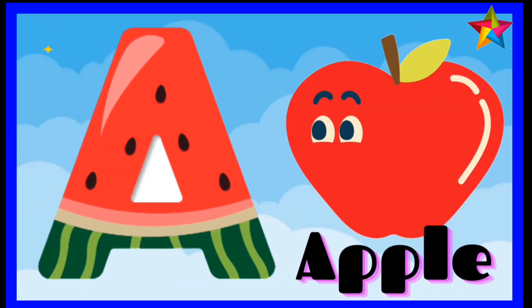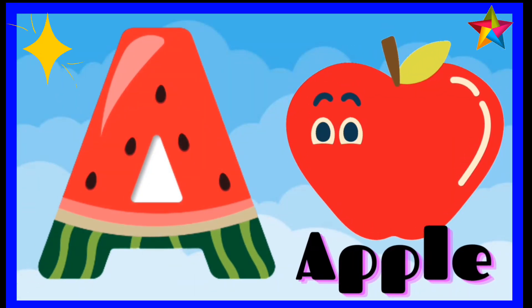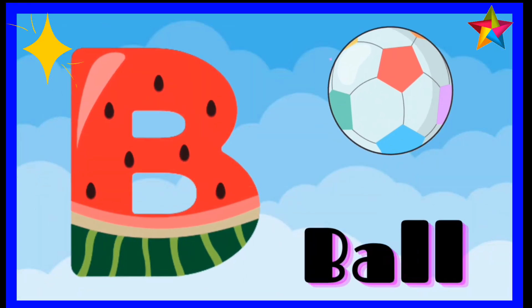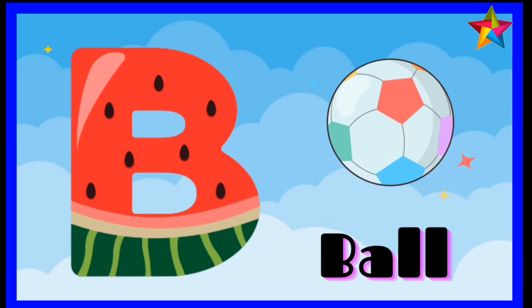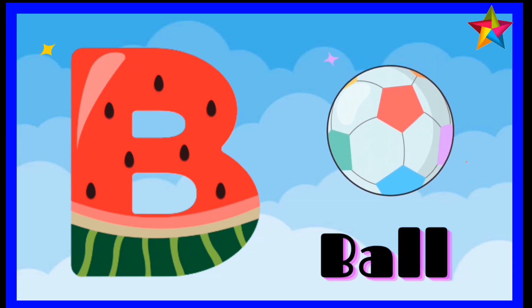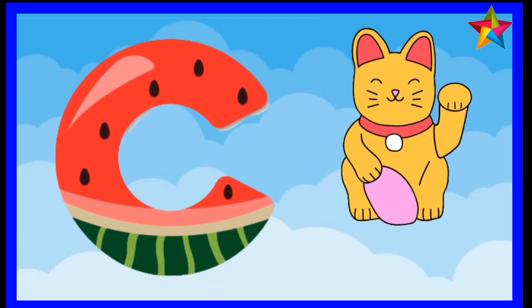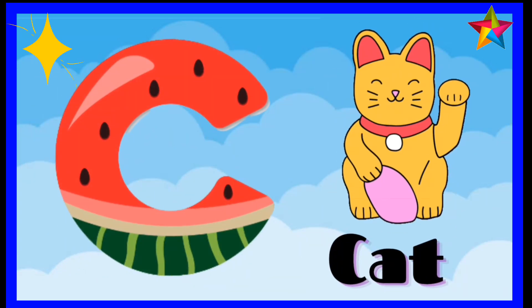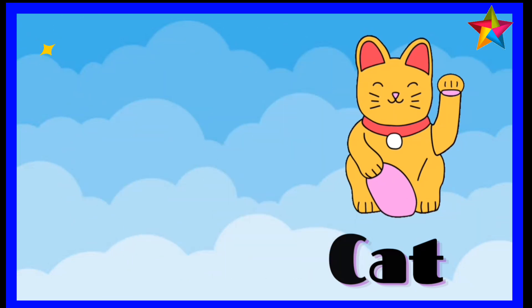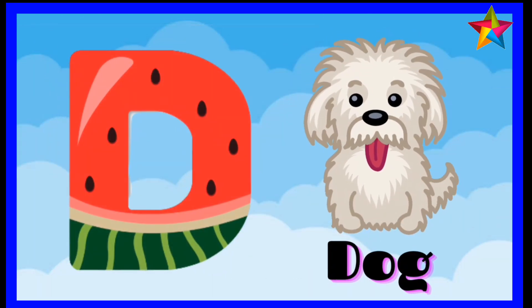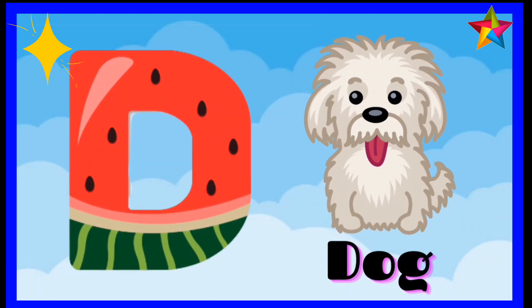A is for apple, a-a-a. B is for ball, b-b-b. C is for cat, c-c-cat. D is for dog, d-d-dog.